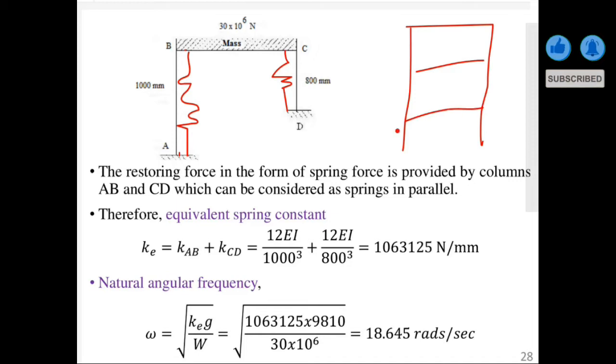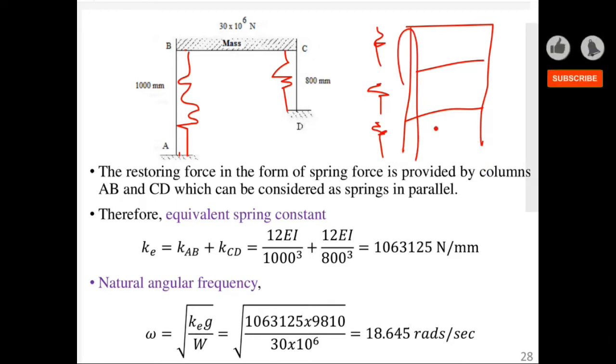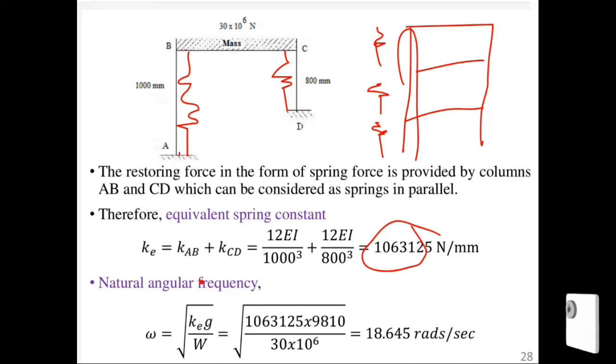In this case, these would be springs in series, while from this column to this side will be springs in parallel. So this is the equivalent spring constant for our frame.